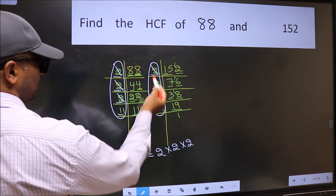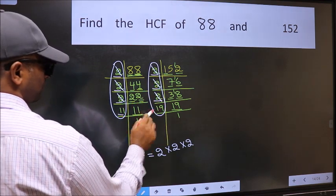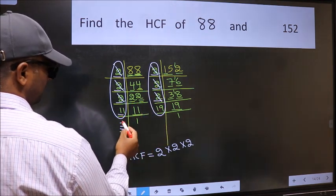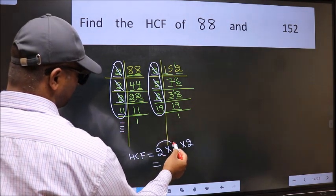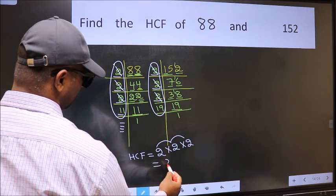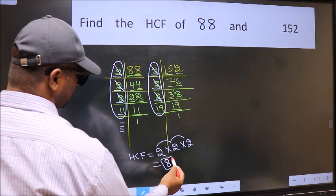Next number 11. Do we have 11 here? No. No more numbers are left out. So our HCF is 2 into 2, 4 into 2, 8 is our HCF.